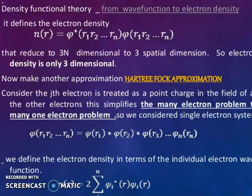Consider the jth electron is treated as a point charge in the field of all other electrons. This simplifies the many electron problem to a single electron problem. We consider single electron system. So phi(r1,r2,...rn) = phi(r1) * phi(r2) and so on. We define the electron density in terms of individual electron wave functions.